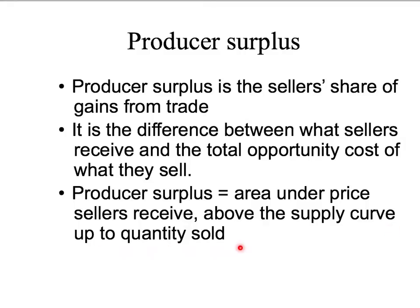But so far, we've only done that for an individual seller. We've looked at Anji and her producer surplus. But when we go to a market, we're going to be interested in the producer surplus to all the sellers — the gains from trade for all sellers put together.